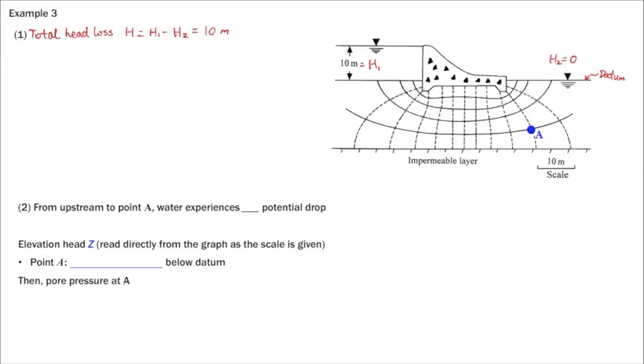And the other thing we can get for a given flow net is these two values. First, NF. This is the number of flow channels. And for this given flow net, we have two. These are all flow channels. So we have five flow channels. So NF equals 5. Remember, flow channel is basically bounded by two adjacent flow lines. So we have five in total.